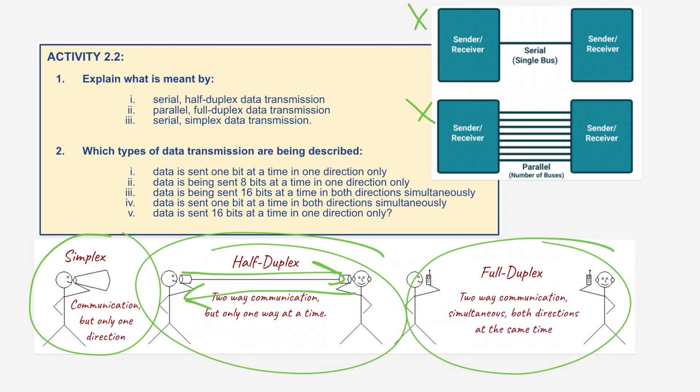And then finally, we have full-duplex, like using your mobile phones. Two-way communication is simultaneous. Data can be sent in both directions at the same time. An advantage might be there's no delays in communication, as both can send and receive data simultaneously.